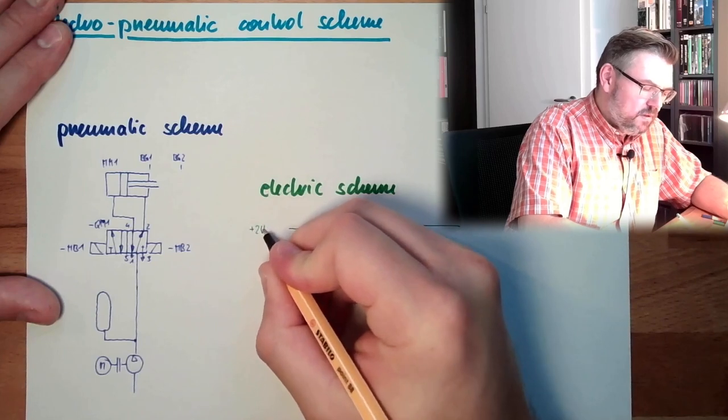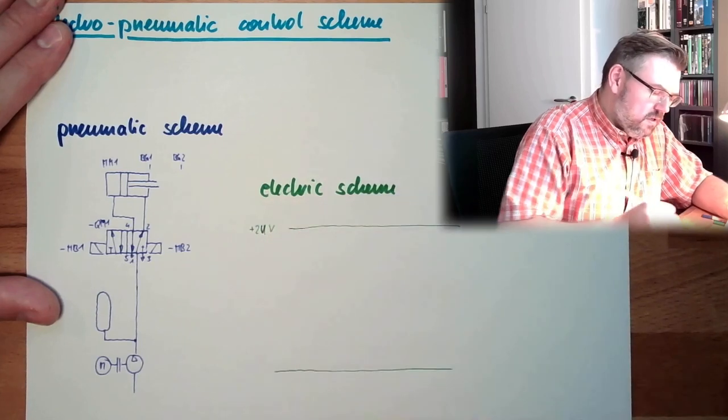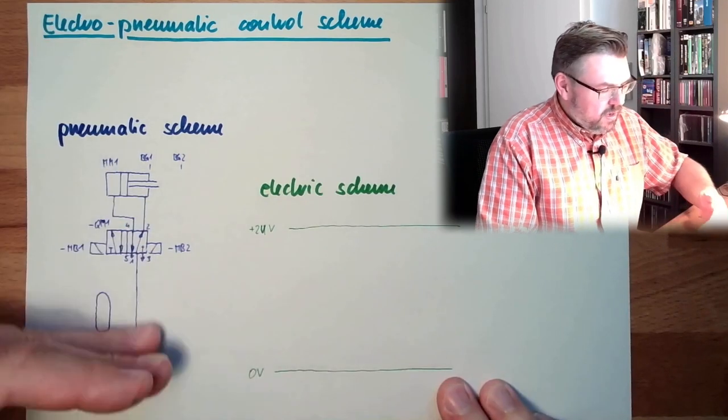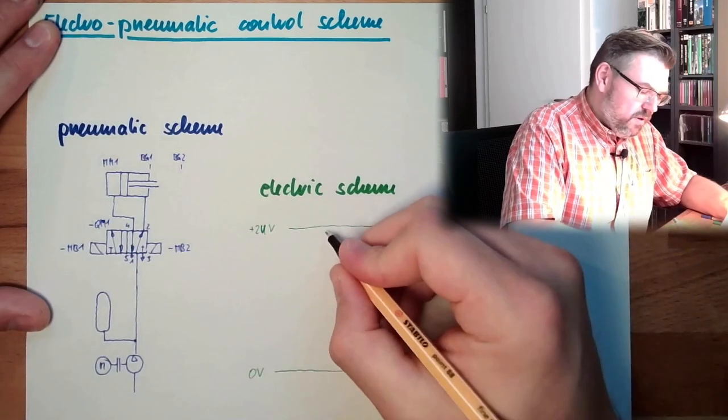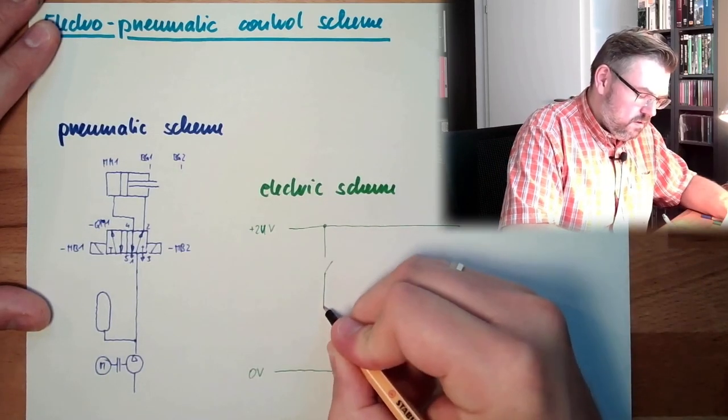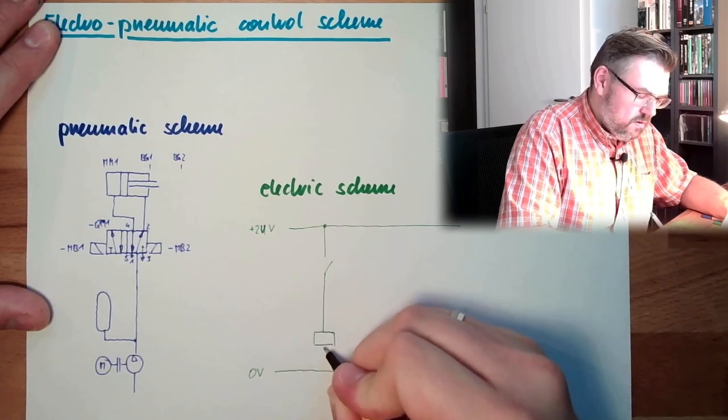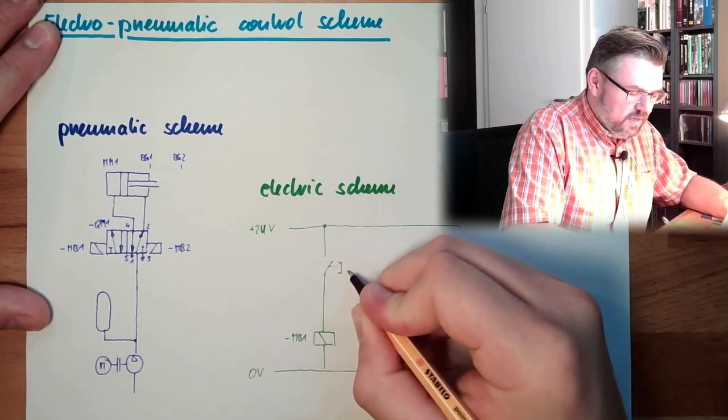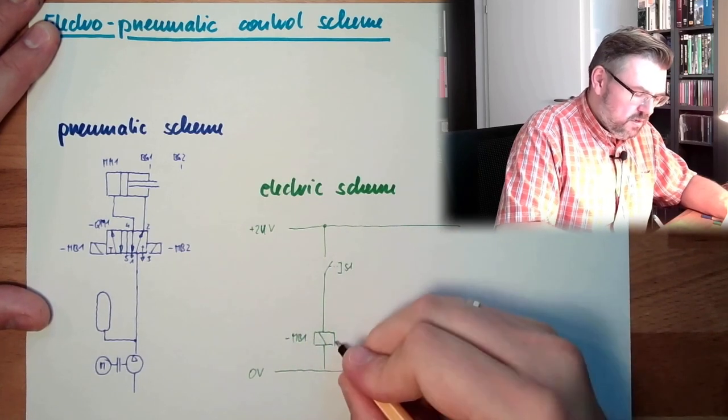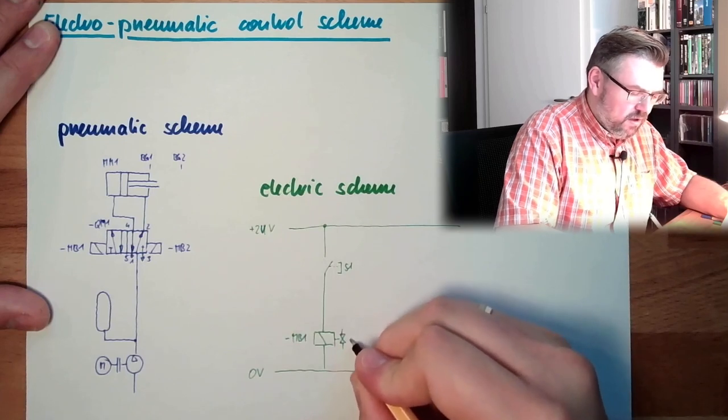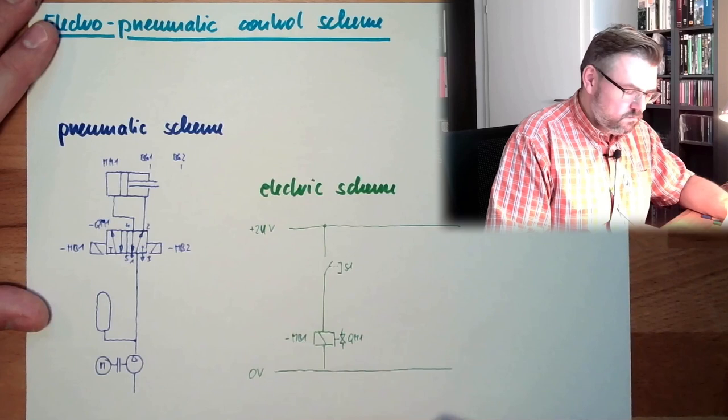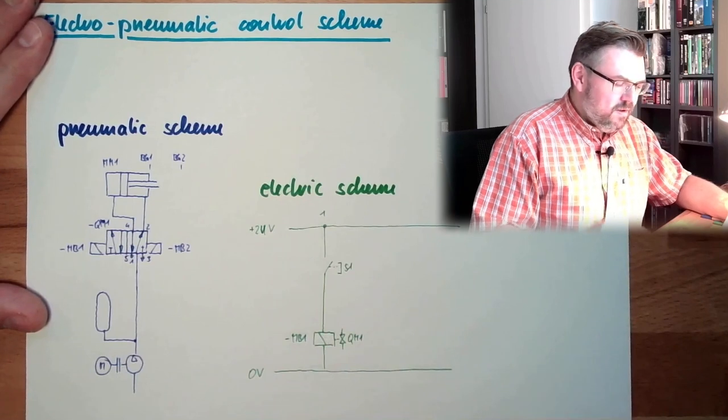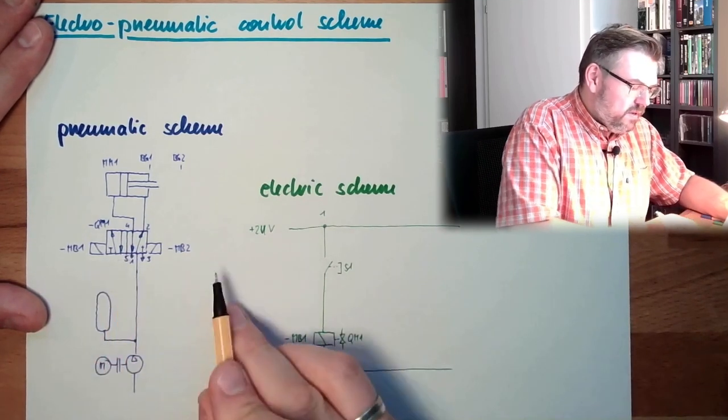So if we draw an example of a circuit diagram, we also said this looks a little bit different. There we start at 24 volts at the top, and at the bottom is zero. Here we are going up, and here we are going down. And I will simply make here a very simple, this should be MB1. There is an S1 switch, this is controlling here our valve QM1. If I press this button, this will be activated and it will switch.